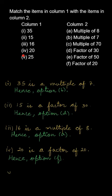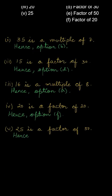The last one is 25. So 25 is a factor of 50. Kyonki 50 ko agar ham chaatya ho, 25 into 2, we can write down 50. So 50 ka factor kya hoga, 25. So we can write down 25 is a factor of 50, option E.